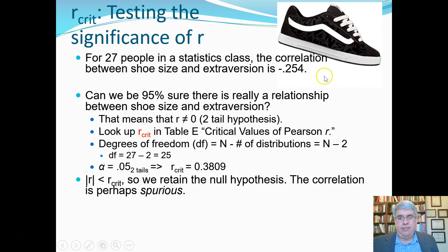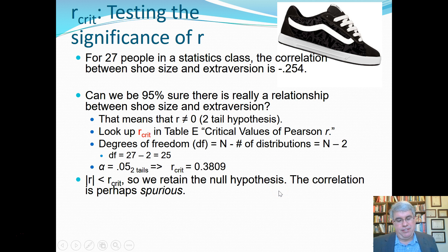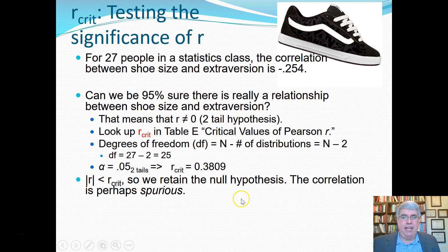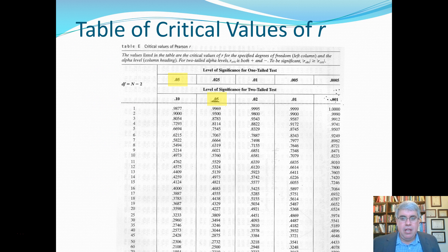In our case, the absolute value of R is 0.254, which is less than the critical value of 0.3809. So the absolute value of R is less than R-crit, and we retain the null hypothesis — the correlation is perhaps spurious. Maybe this is just an error from having a small sample size. We'd have to keep testing to be more sure, but we must retain the null hypothesis that there's no relationship between shoe size and extraversion.